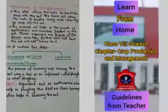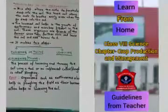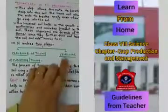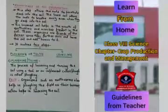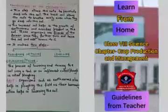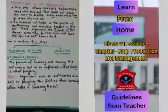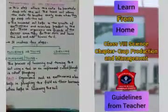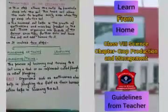Soil preparation basically involves two steps. The first step is plowing, also called tilling, and the other step is leveling. The process of loosening and turning the soil using a tool called a plow is called plowing. Organisms such as earthworms also help in plowing the field with their burrowing action, which further helps in loosening the soil.